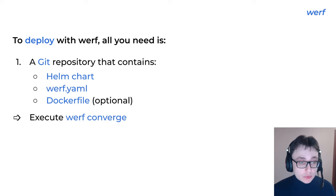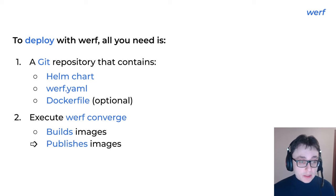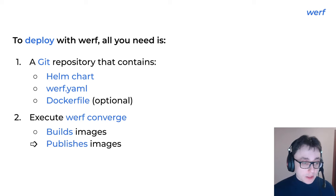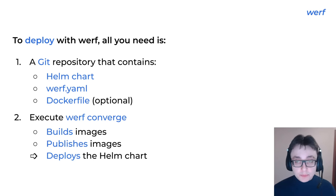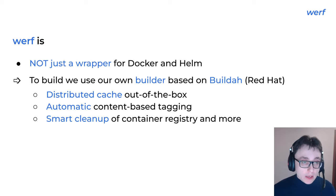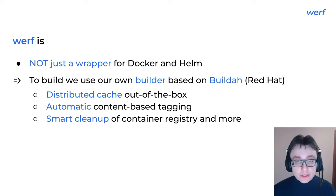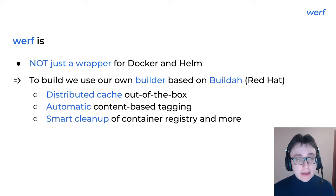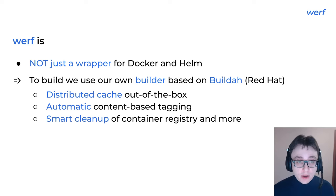Having all that, you execute werf converge, which will build the images, publish them to the container registry, and then deploy your Helm chart. But Werf is not just a wrapper around Docker and Helm. To build, we use our own builder, which is based on Buildah from Red Hat, in comparison to the vanilla Docker builder.